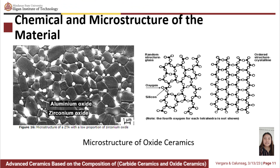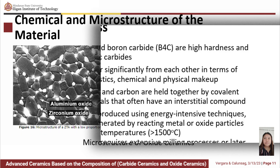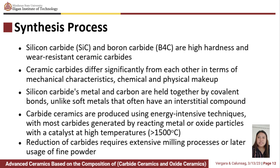Here is an example of the microstructure of an oxide ceramic. Oxide ceramics are defined as inorganic compounds of metallic or metalloid elements such as aluminum, zirconium, titanium, magnesium, and silicon with oxygen. The left figure shows the microstructure of a zirconia-toughened alumina with a low proportion of zirconium oxide.